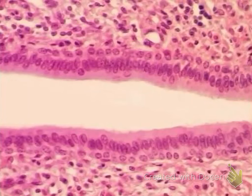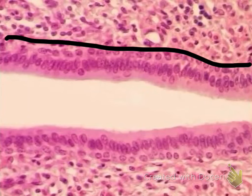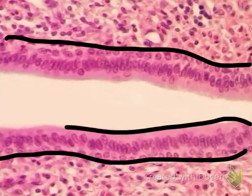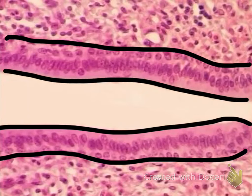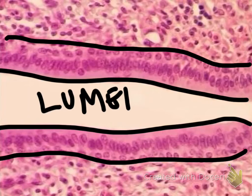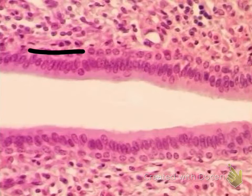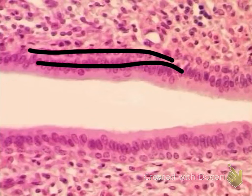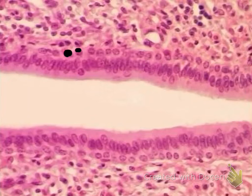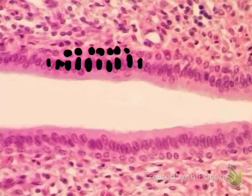Basement membrane. Apical surface. The space inside the organ is your lumen, and this is your epithelial tissue. Notice that there are two rows of nuclei — two rows means two layers, which means it's stratified. Notice that the cells near the basement membrane look cuboidal, but when you look at the top layer closer to the apical surface, the nuclei are oval-shaped, so the cells are tall. Multiple layers of tall cells — this is your stratified columnar epithelium.